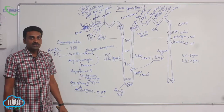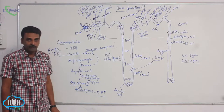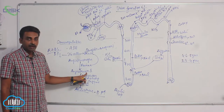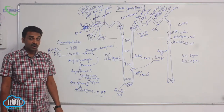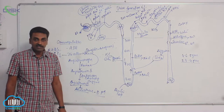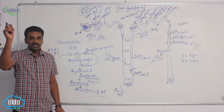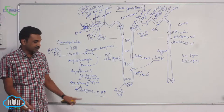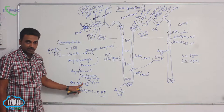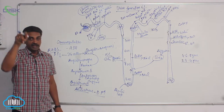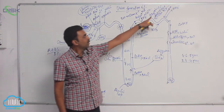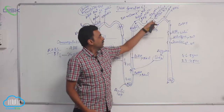It converts angiotensinogen — which is inactive — to active form. Angiotensinogen is a protein produced from the liver and it's inactive, already present in blood. Renin, also called angiotensinogenase, converts angiotensinogen to active angiotensin 1. Angiotensin 1 is a decapeptide; angiotensin 2 is an octopeptide. Angiotensin 1 is converted into angiotensin 2 by angiotensin-converting enzyme, present in the capillaries of the lungs. Angiotensin 2 goes and acts on the adrenal cortex to release aldosterone. Under the influence of aldosterone, sodium absorption occurs.